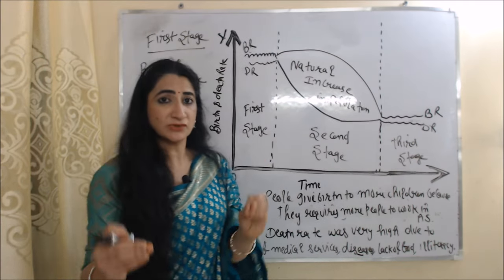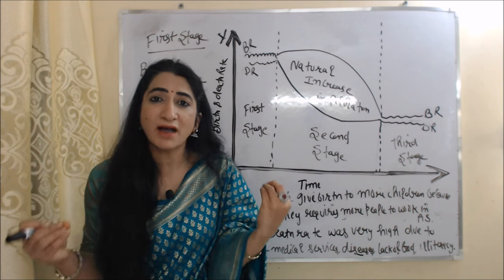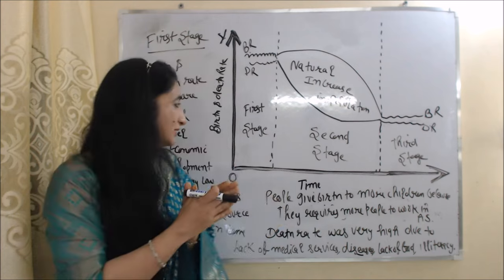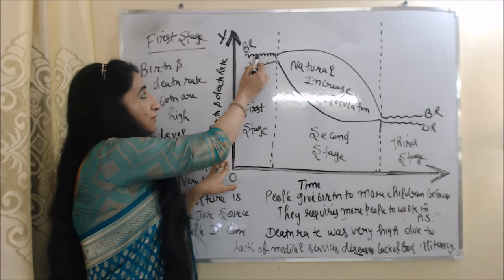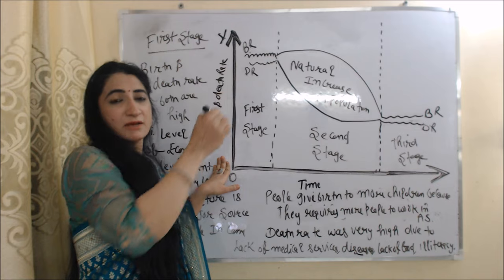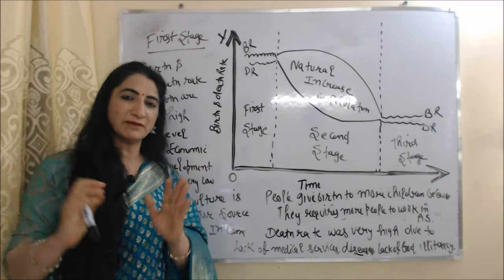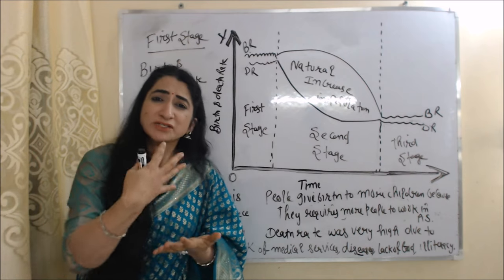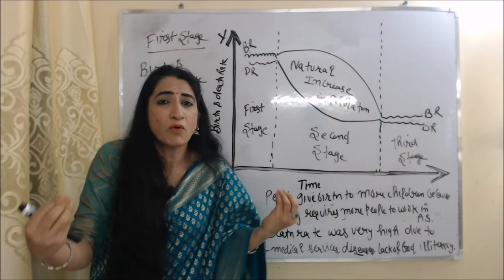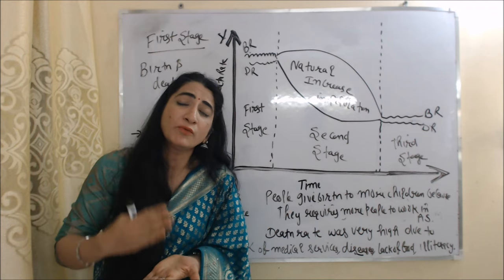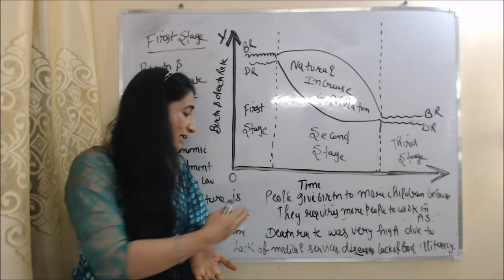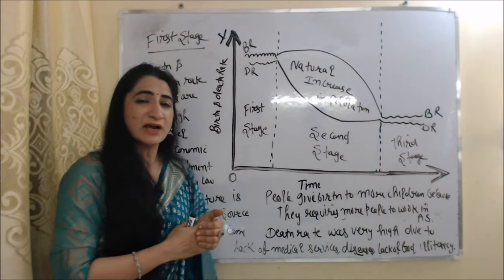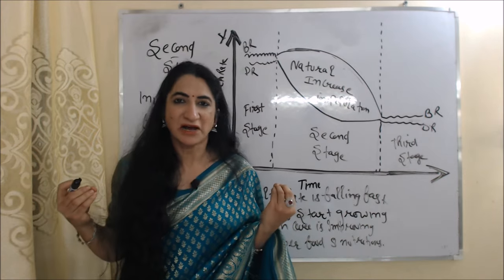During the first stage, birth rate and death rate are both very high. You can see here in the first stage that the level of economic development is very low and agriculture is the major source of income. That's why people give birth to more and more children, because they require more people to work in the agriculture sector. Death rate is also very high due to lack of medical services, diseases, lack of food and nutrition, and illiteracy.